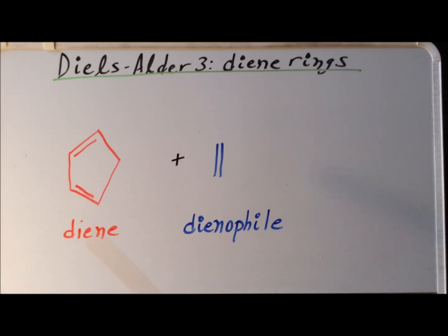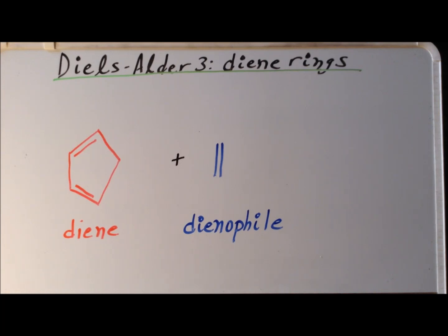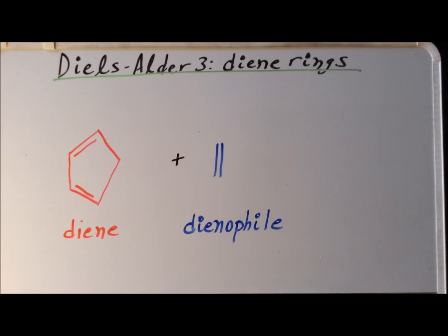That way we guarantee that at every single moment our diene has the proper S-cis conformation. So the simplest example of this would be cyclopentadiene, which is abbreviated as CP, particularly in inorganic chemistry.